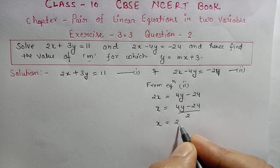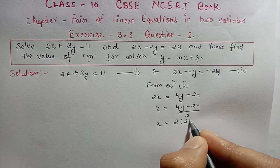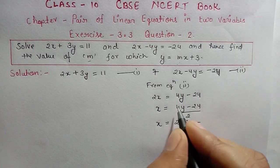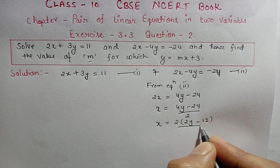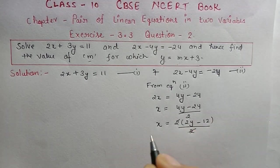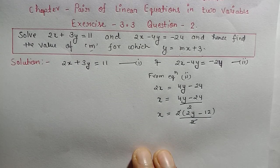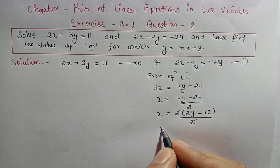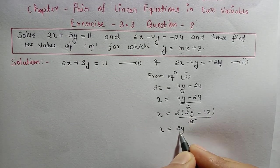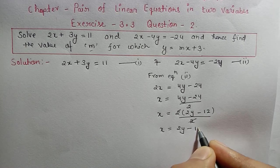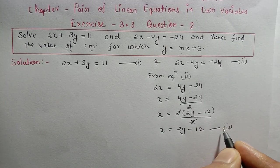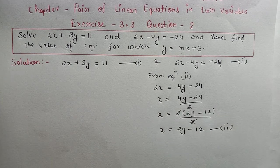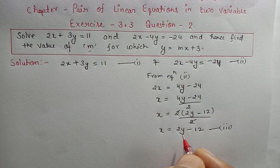We can take 2 as common from the numerator: 2(2y - 12) divided by 2. The 2s cancel out, so we get x = 2y - 12. This is our equation number three.